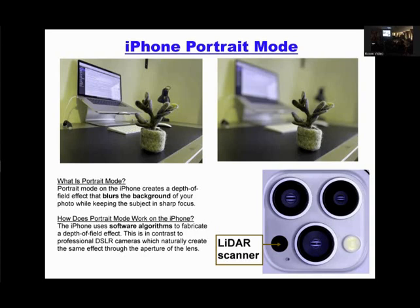Here's my iPhone again — three lenses, and this other thing is called the LiDAR scanner. You can Google it to learn more, but what it does is send pulses of light, measure the time it takes to come back, and maps the entire scene in 3D. It takes this depth information and stores it together with the JPEG file.